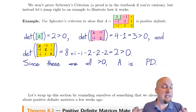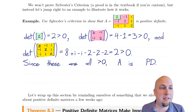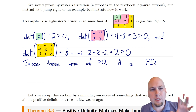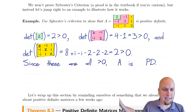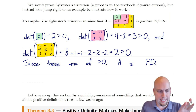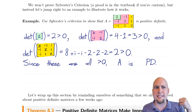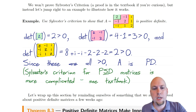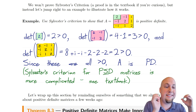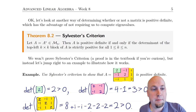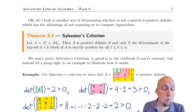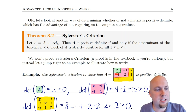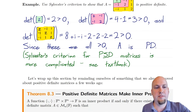For some matrices — particularly those with lots of zeros — Sylvester's criterion is an easier method of determining positive definiteness. Now, you're probably wondering about positive semi-definiteness. This is one of the few cases where things get a lot messier. There is a version of Sylvester's criterion for positive semi-definiteness, but it's not as simple as just requiring the top-left k×k determinants to be ≥ 0 — that turns out not to be sufficient. You need to check more determinants, so we won't cover that version.